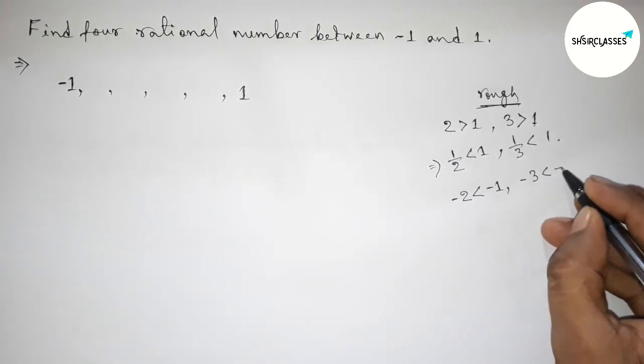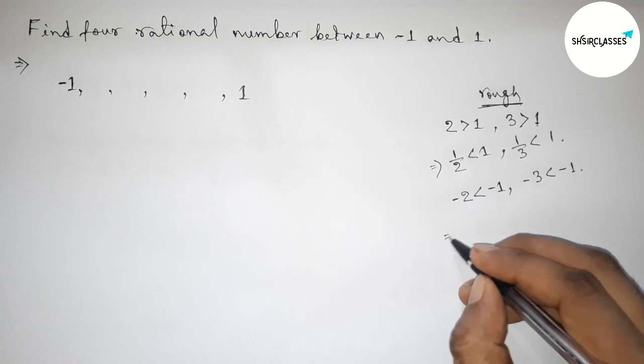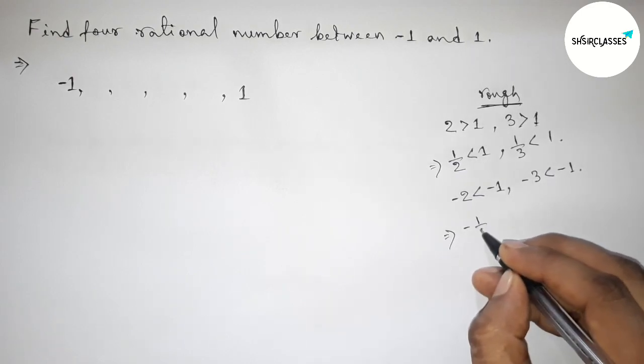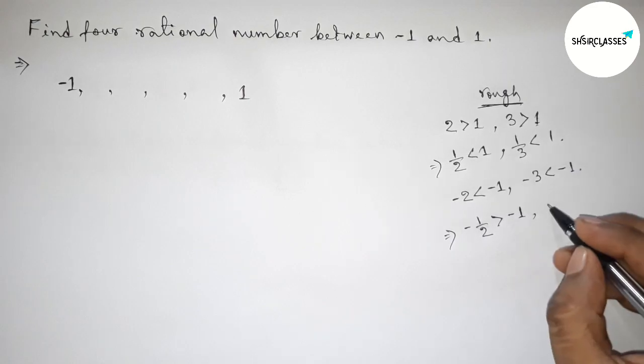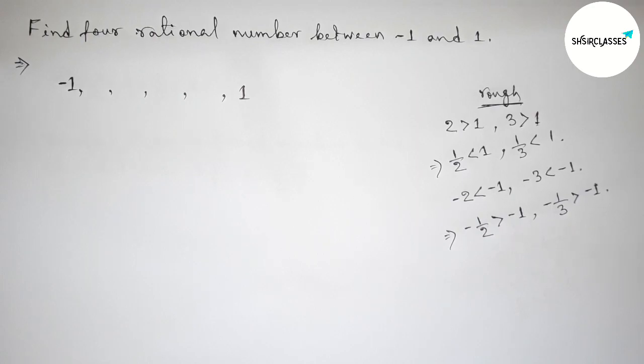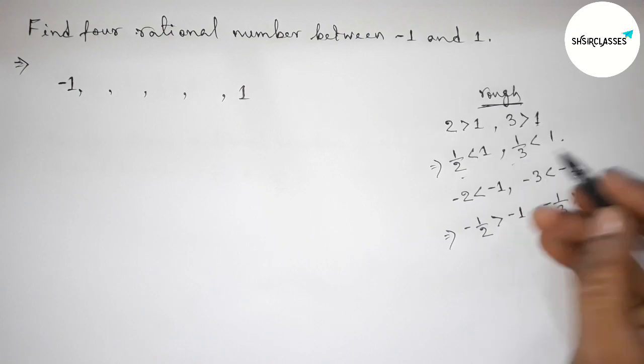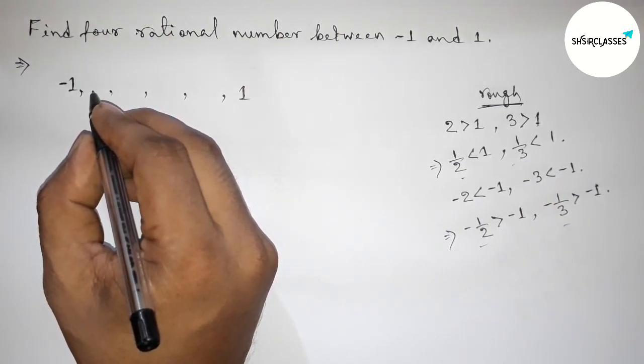And in a similar way, now finding inverse of both numbers. That is minus one by two, this is greater than minus one, and minus one by three, this is also greater than minus one. So here these are four required rational numbers.